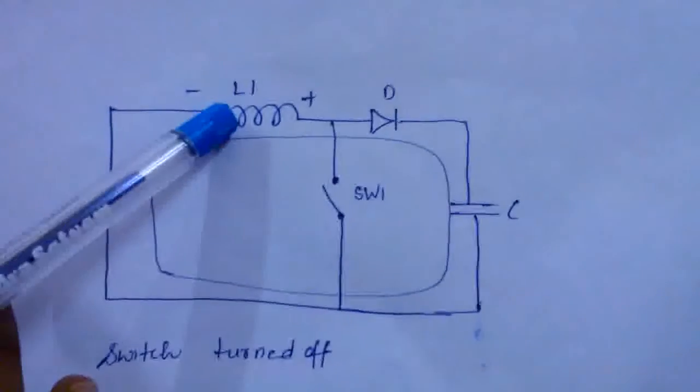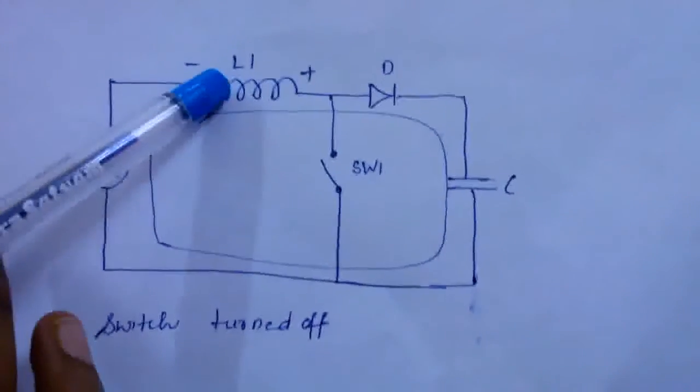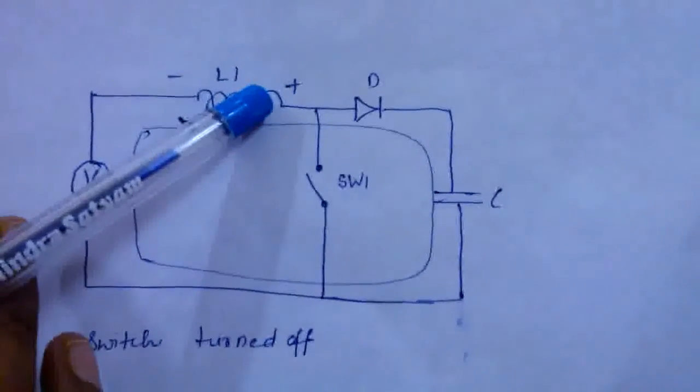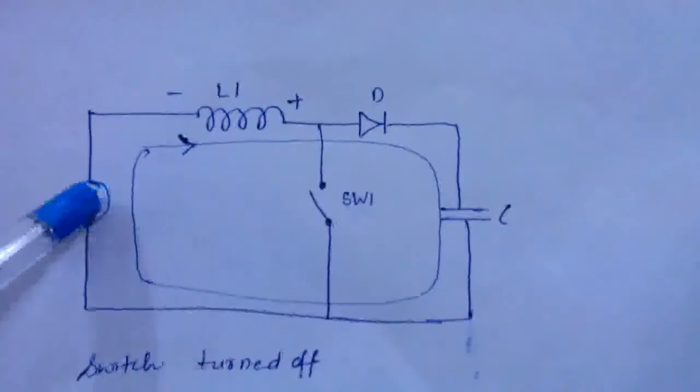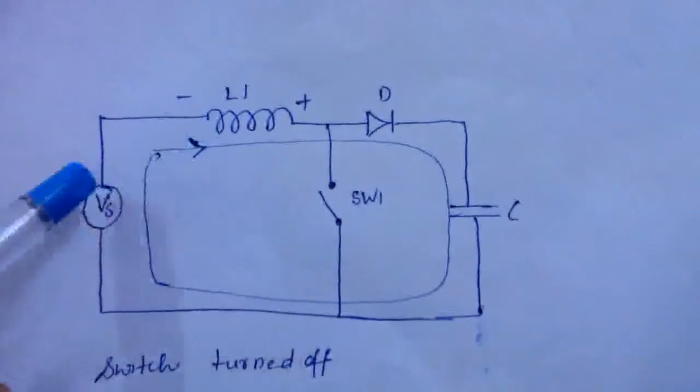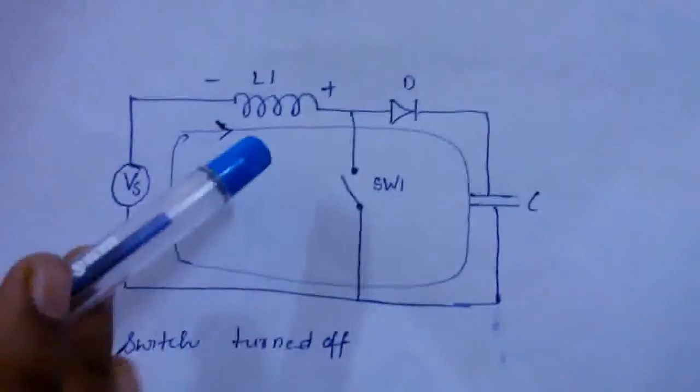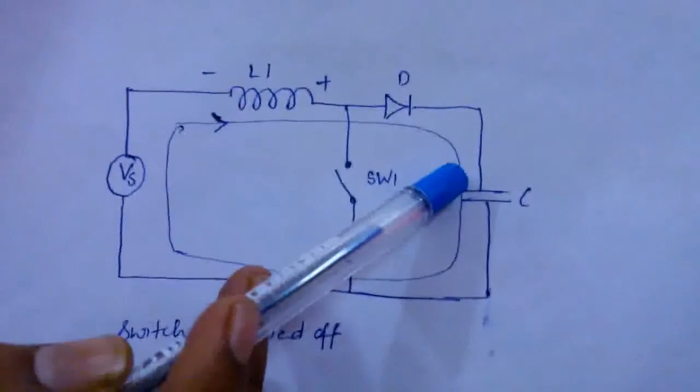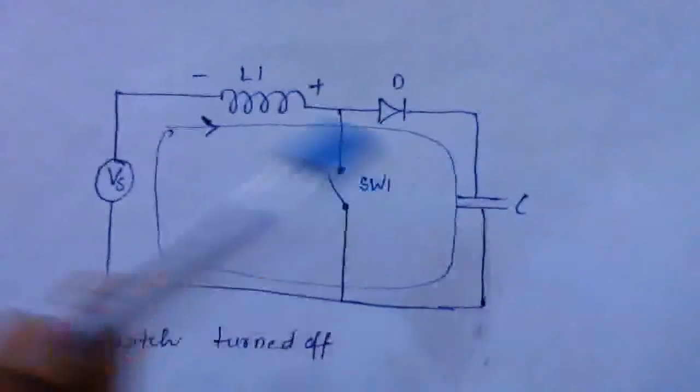Now, the stored energy in the inductor tends to collapse and its polarity reverses such that it adds to the input voltage. Thus, the voltage across the inductor and the input voltage are in series and together charge the output capacitor to a voltage higher than the input voltage.